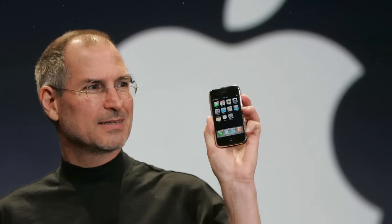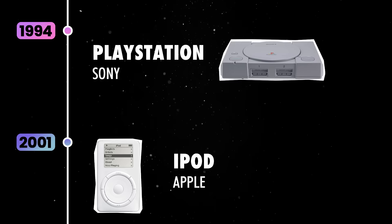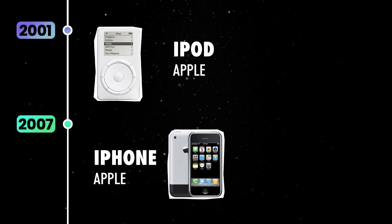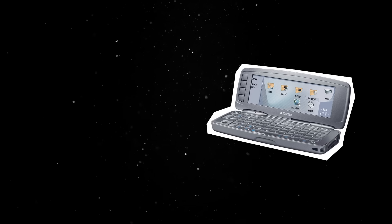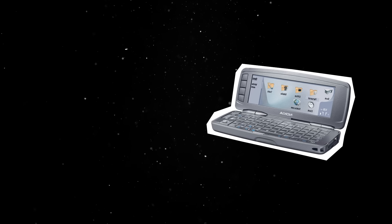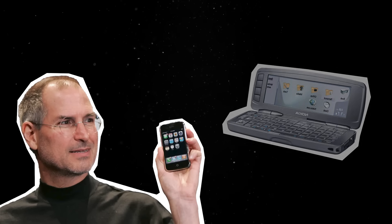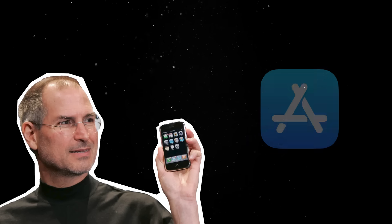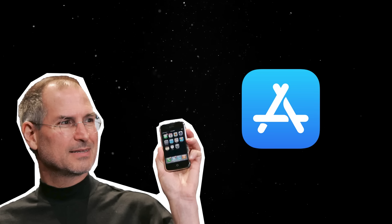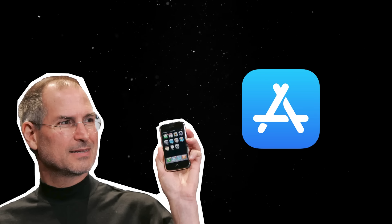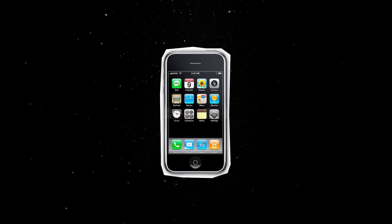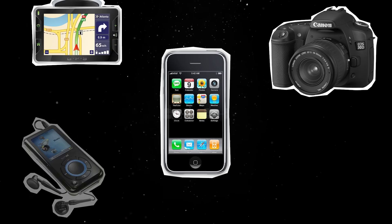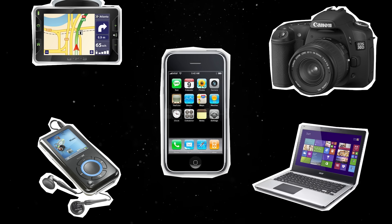No innovation from the 2000s would be as disruptive and groundbreaking as what Apple unveiled in 2007. This is when Apple introduced the iPhone, forever changing the way people interacted with technology. Unlike previous mobile phones, which relied on keypads and styluses, the iPhone featured a full touchscreen interface, an intuitive operating system, and a revolutionary App Store, where third-party developers could create and distribute applications. The impact was immediate — within a few years, smartphones became essential, replacing cameras, GPS devices, MP3 players, and even laptops for casual users.